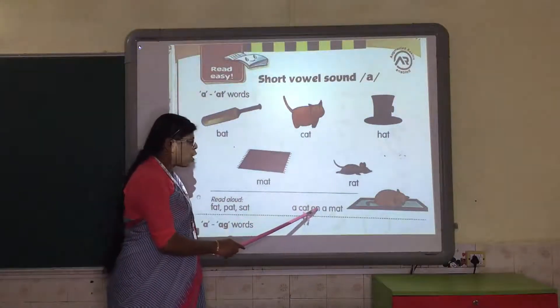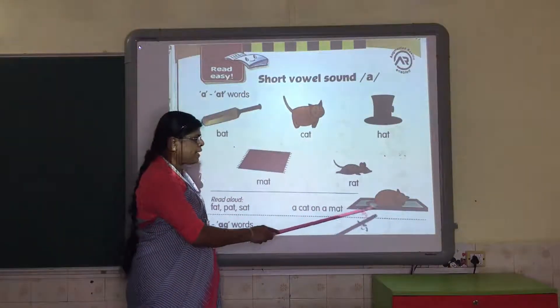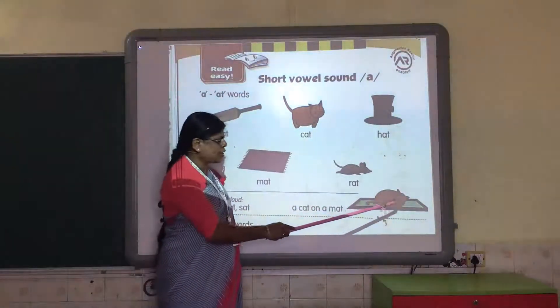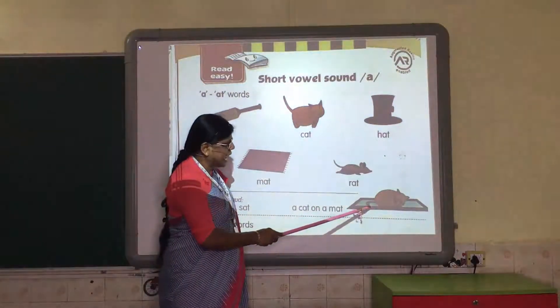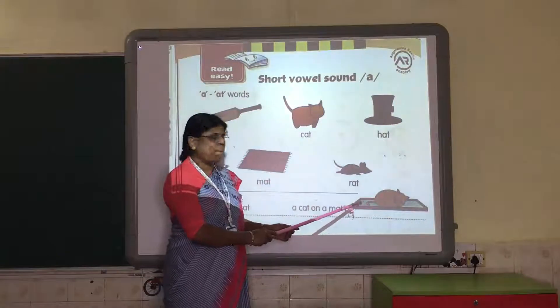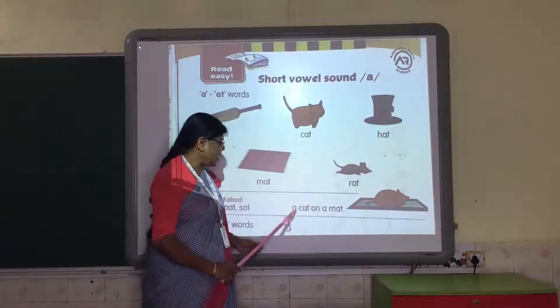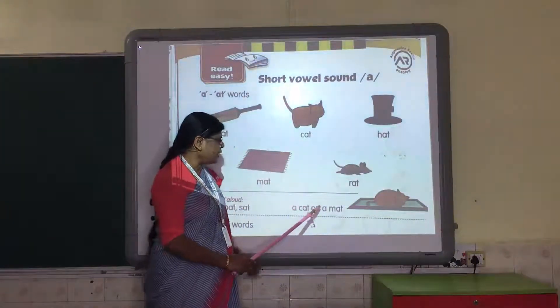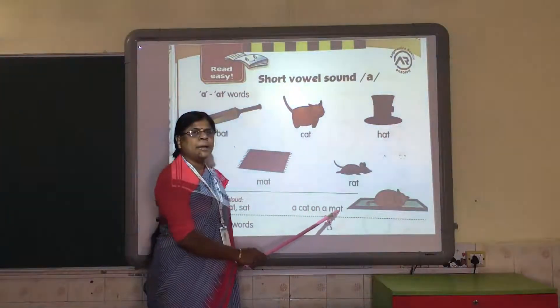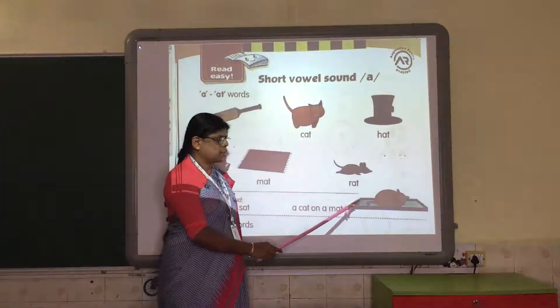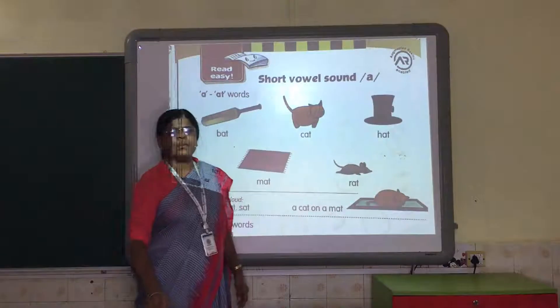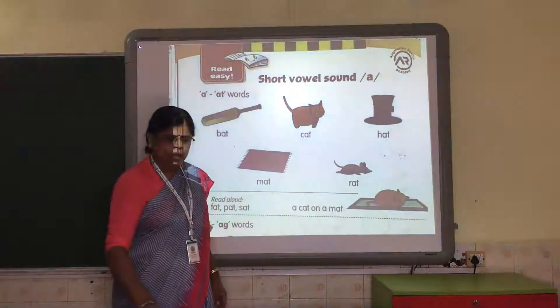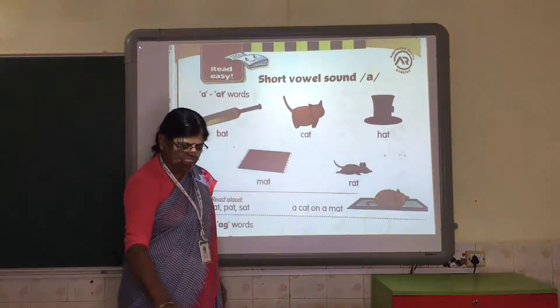A cat on a mat. Where is this cat, children? This cat is on the mat. So — a cat on a mat. That is how you can form new words.